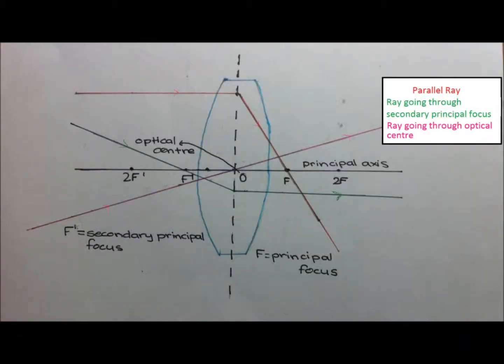Here is a diagram of a converging lens. The principal axis is a line which goes through the optical center of the lens, and the optical center is the point which is the exact center of the lens. The principal focus is the point on the principal axis where all the parallel refracted rays converge, and the secondary principal focus is the point at the same distance from the lens as the principal focus, but located on the opposite side. There are three imaging rules to locate an image in a converging lens: one, a ray parallel to the principal axis is always refracted through the principal focus; two, a ray through the secondary principal focus is always refracted parallel to the principal axis; and three, a ray through the optical center always continues on without refracting.